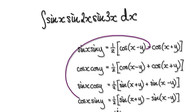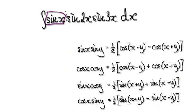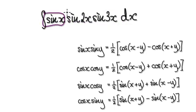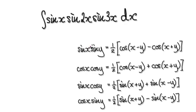This identity is saying to break the product up. Here you've got three blocks multiplying with each other. Let's try and break up two of these blocks. To break up a sine and a sine, you would use this identity.